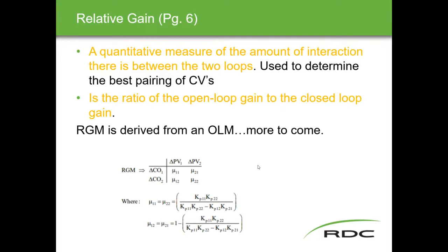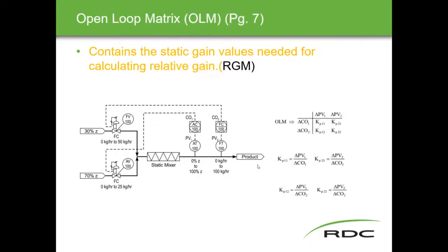We start out with the concept of determining an open loop matrix, which contains the static gain values needed for calculating the relative gain so we can make our relative gain matrix. All of this builds up to figuring out how to set the math and values so we know how one loop affects the other and how we can cancel out that effect to get the most stable and acceptable process operation.